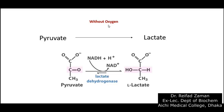Let's have a closer look at the lactate formation. Two molecules of hydrogens are added to the pyruvate and the 3-carbon pyruvate turns into the 3-carbon lactate. So where does it get this hydrogen from? Well, obviously from the NADH. And the name of this enzyme is the lactate dehydrogenase.